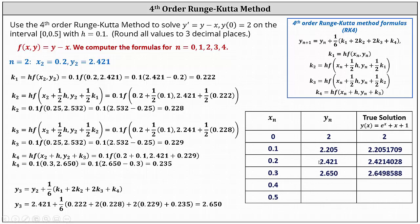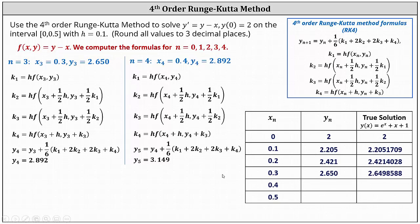We have two more rows to complete in the table: y sub 4 and y sub 5. To determine y sub 4, we use x sub 3 and y sub 3 because n equals 3. The final result is y sub 4 equals 2.892. To determine y sub 5, we use x sub 4 equals 0.4 and y sub 4 equals 2.892. The final result is y sub 5 equals 3.149.